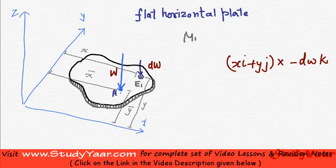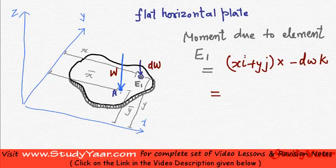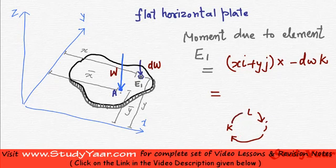So the moment due to element e1 is equal to this. If you just expand this, you are going to get i into k. Look, you have i, you have j, you have k. i cross j is k, j cross k is i, k cross i is j. So what is i into k? i into k is minus j.